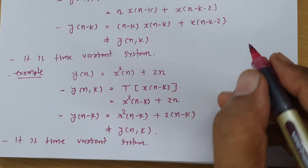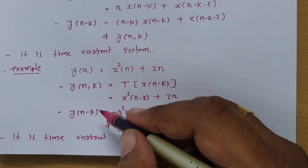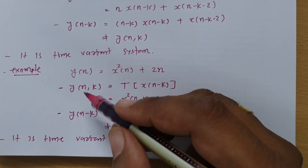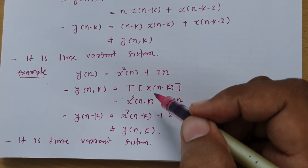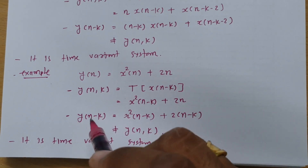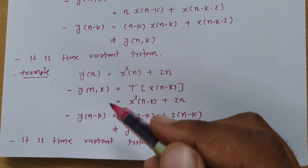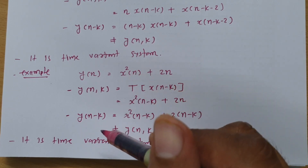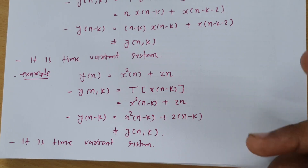So here is the key thing to understand. You need to check the condition: y(n minus k) should equal y(n, k). When you calculate y(n, k), you calculate the response of the system with input x(n minus k). When you calculate y(n minus k), you replace all n with n minus k. If y(n, k) equals y(n minus k), it is a time invariant system. If not, it is a time variant system.